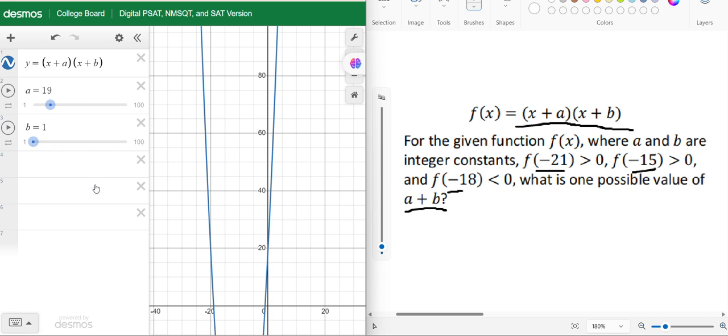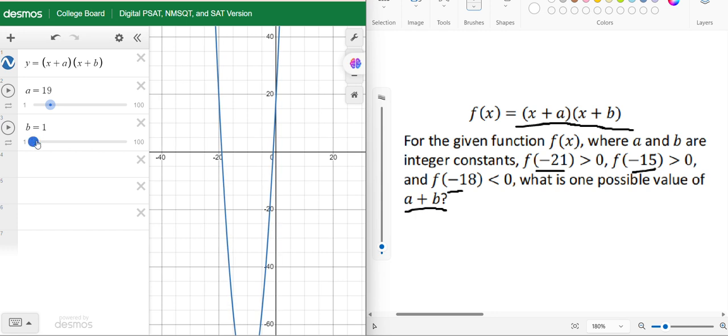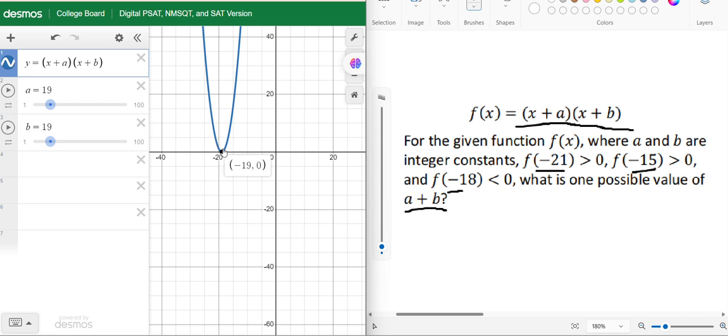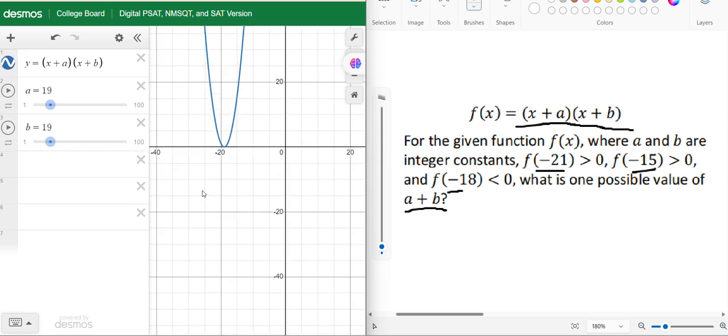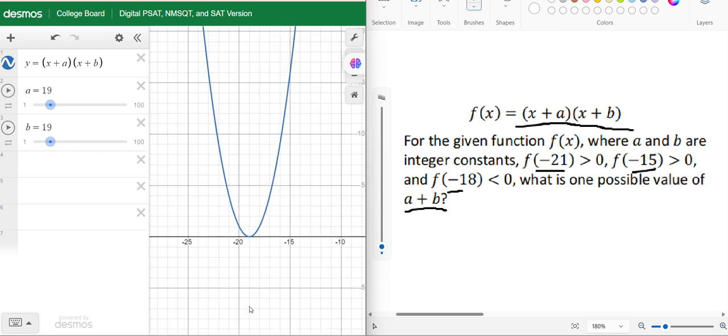So a equals 19. Now let us see for f(-15), let us use b. f(-15)... let us zoom a little bit.